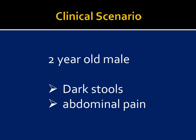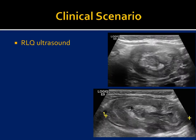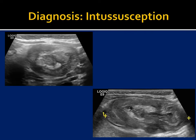Let's start with a typical clinical scenario: a two-year-old male who presents with dark stools and abdominal pain. Our standard of care examination for this indication is an ultrasound. We perform an ultrasound in the right lower quadrant and see a classic target appearance on the transverse image, and on the longitudinal image, a classic pseudokidney appearance. This is classic intussusception.